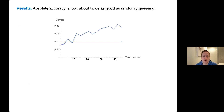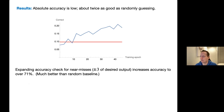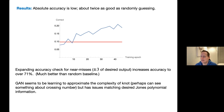The absolute accuracy was not super high — about twice what you'd expect from random guessing. But if we expand our criteria and check for near misses within plus or minus two or three, we get much better results. This suggests the neural network is learning to approximate the span of the Jones polynomial, perhaps by generating higher crossing-number knots. It's not clear whether it's directly learning about the span or just creating knots with sufficient complexity to trick the discriminator — more work is needed to tease that out.